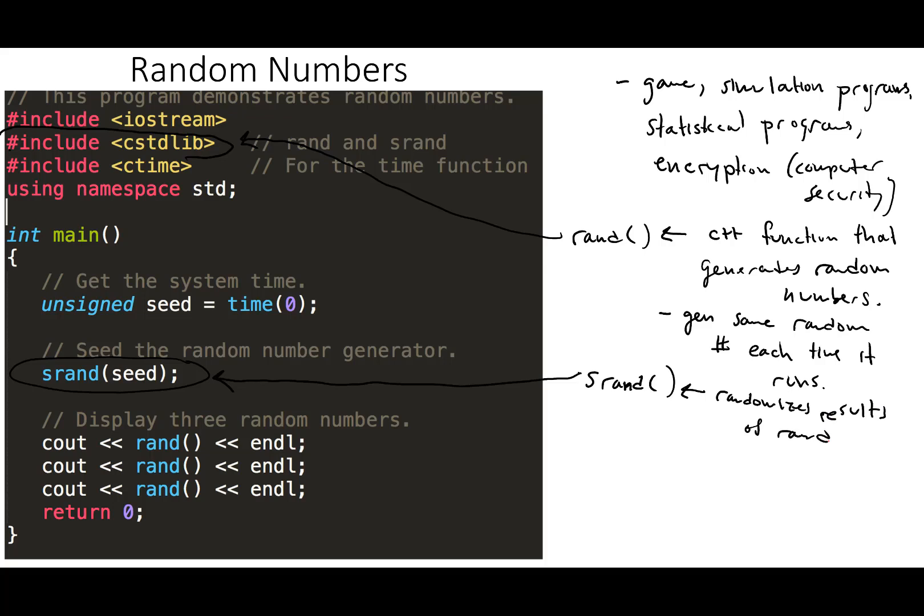So basically SRAND accepts an unsigned integer, and we can give it any unsigned integer we want, but I'm going to tell you in a minute what's normally given to it. And this unsigned integer acts as a seed for the random number generator. So we want to give it different seeds each time the program is run, because different seeds generate different random numbers.